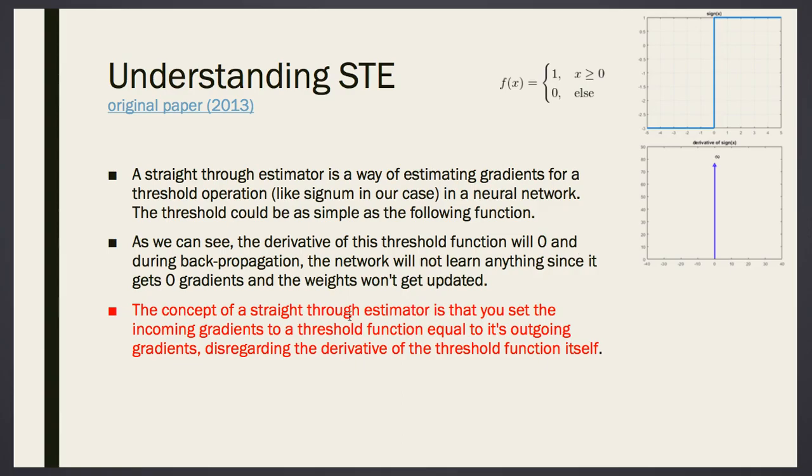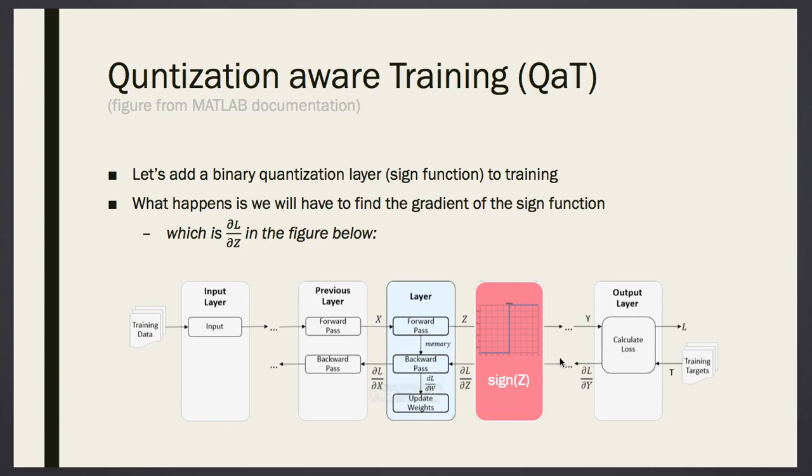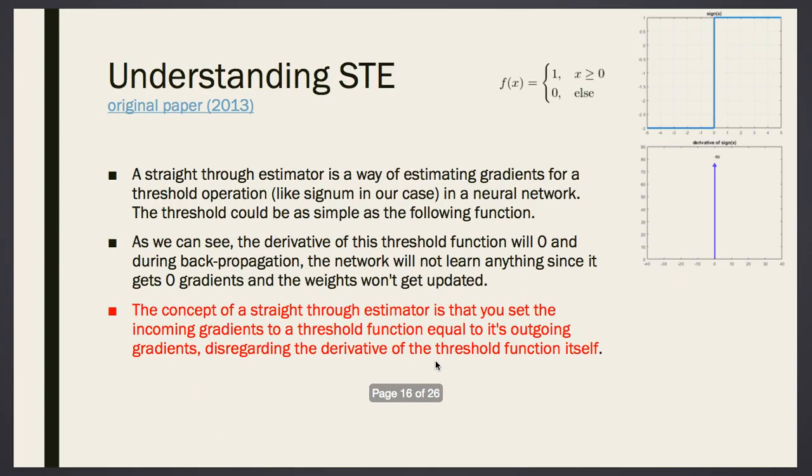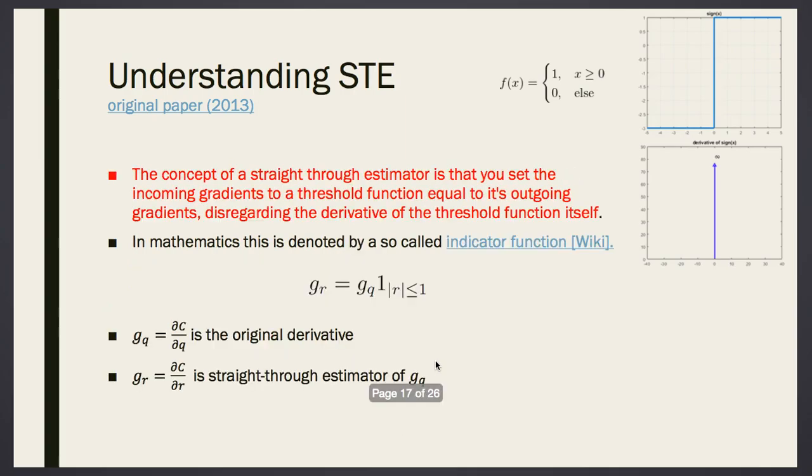So, the concept of straight-through estimator is that you set the incoming gradients threshold function equal to the outgoing gradients. I repeat, the concept is, you have some gradients coming in, you make them equal to the ones going on. It is like, the gradients are going straight through inside, but with a rule. We are going to clip them with a rule. Not without a rule, but with a rule. But the idea is, the gradient, let the gradient flow straight through inside. That's why it's called a straight-through gradient.